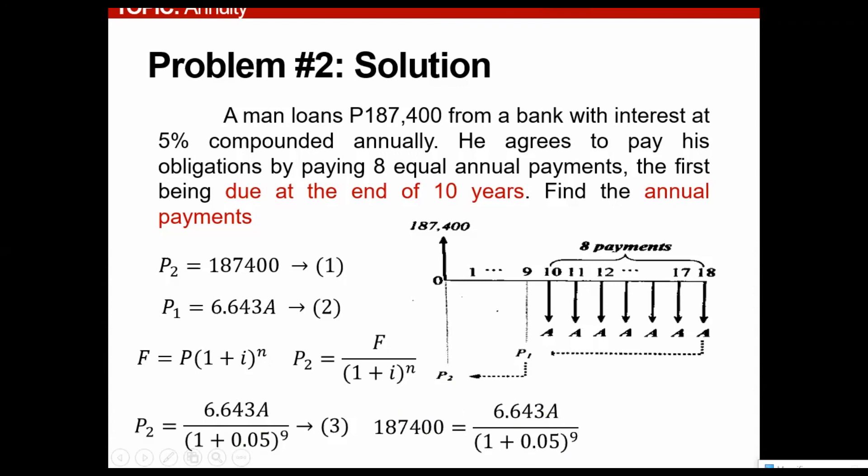So you can use your calculator to solve for A. Concept, simple multiplication here. And then divide by 6.643. And then you'll arrive at 43,763.20. So that's the annual payment if you want to compute with the following terms and condition to a bank. So basically, you would argue on a bank that after 10 years, so this would be your annual payment.